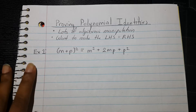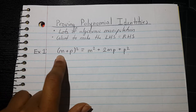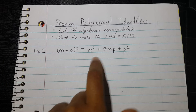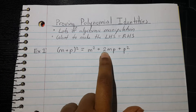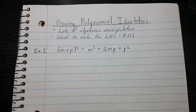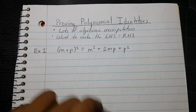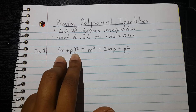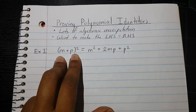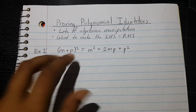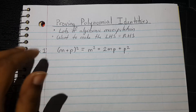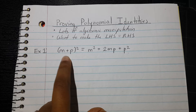Let's look at example one. It says (m + p)² is equal to m² + 2mp + p². The first question you want to ask yourself is: is the left-hand side simplified? Are there no parentheses, no exponents that I need to distribute or anything? Is everything ready to go? And in this case, it's no.